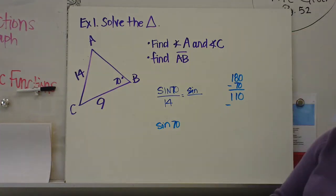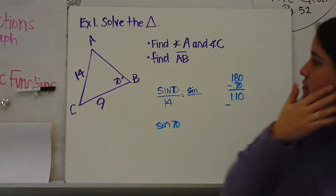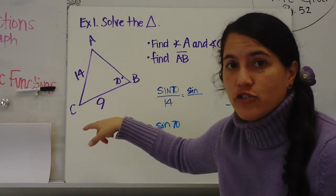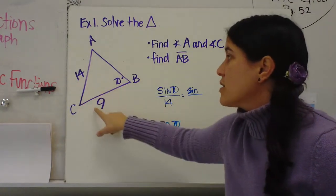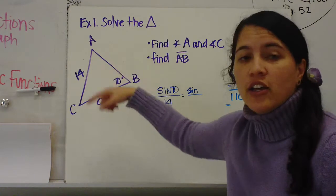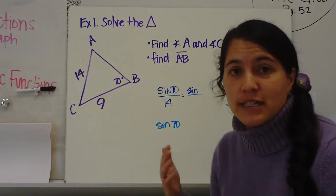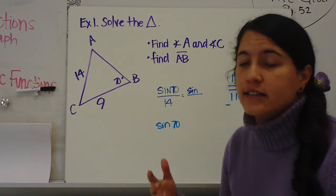So example one, solve the triangle. We have an oblique triangle. That means there's no right angle. We have sides of 14 and 9 and an angle of 70. You cannot use the Pythagorean theorem because it's not a right triangle. So we need to use the Law of Sines.